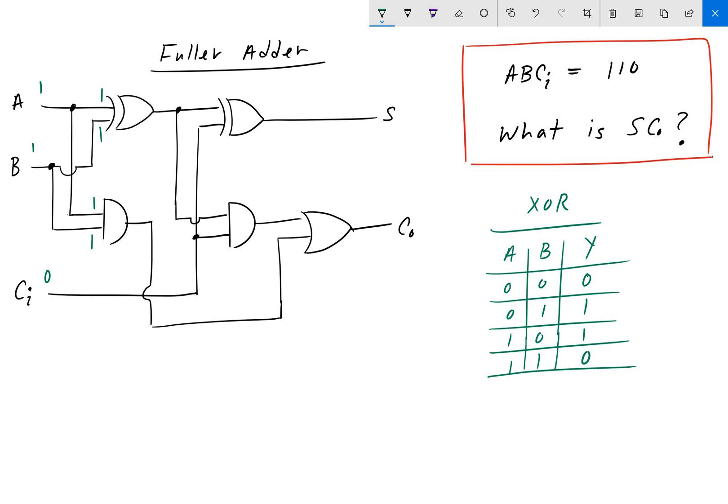C is 0, so it would be a 0 here and a 0 here.